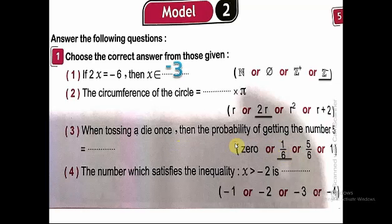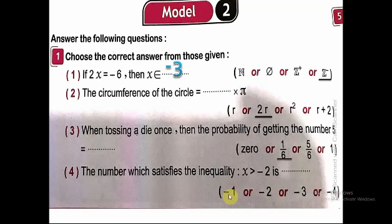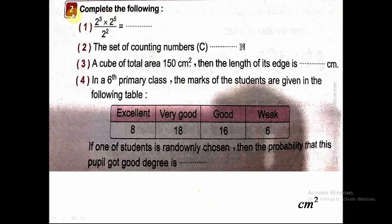Number 4: the number which satisfies the inequality x > negative 2 — which negative number is bigger than negative 2? Looking at negative 4, negative 3, negative 2, negative 1 — I think it's negative 1, because negative 1 is bigger than negative 2.